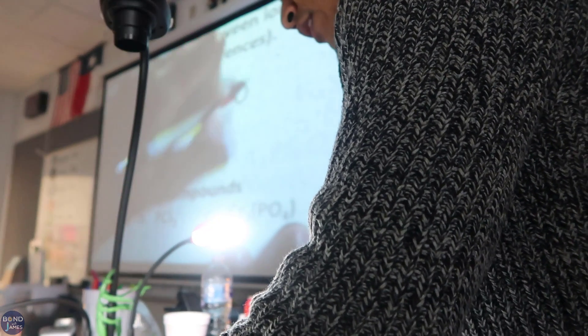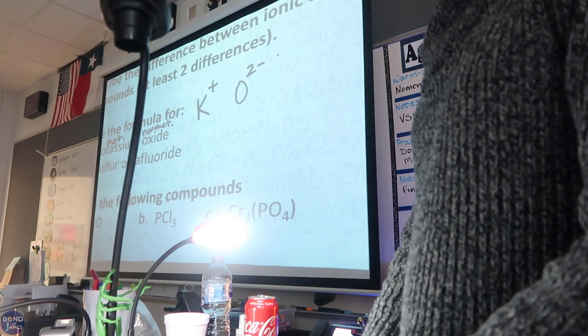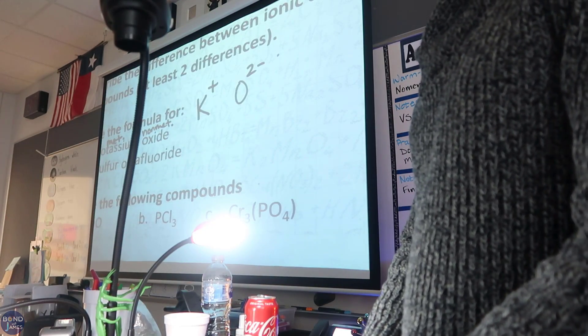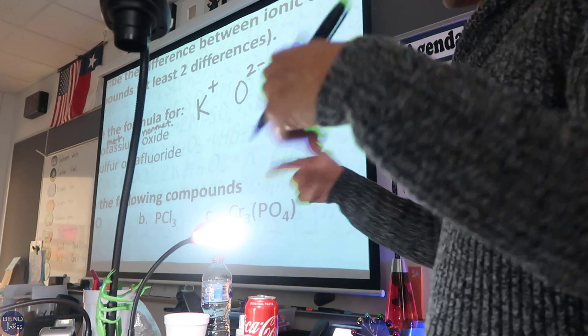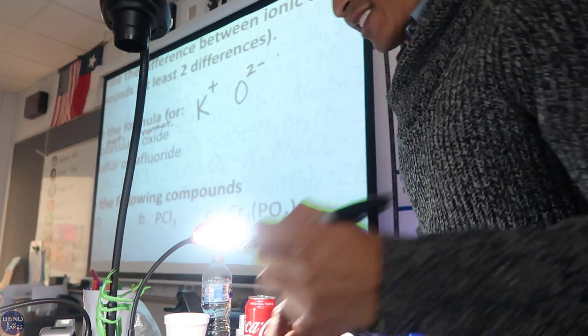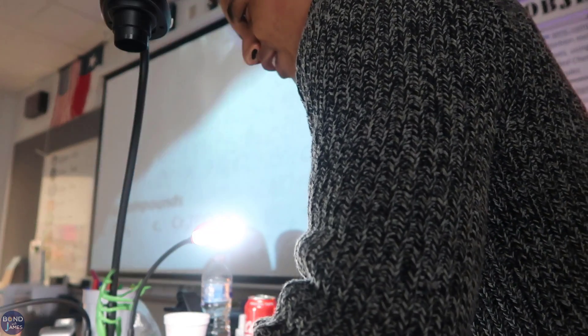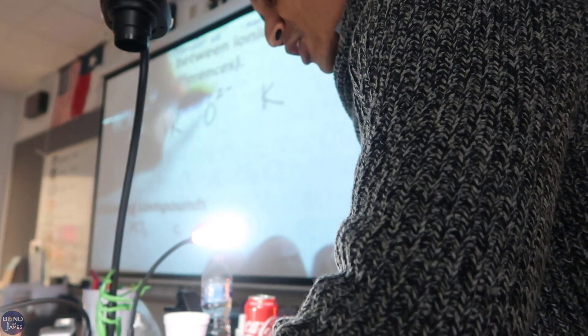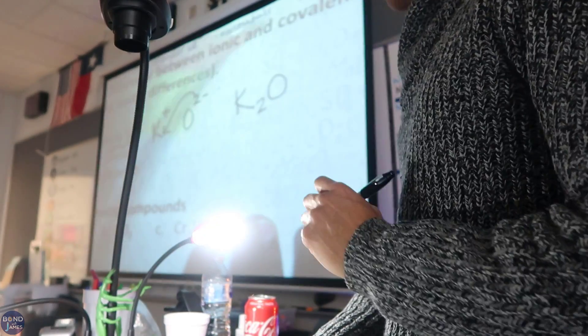Oxide is O2 minus, and what do you do next? Criss-cross applesauce, drop it like it's hot. The two criss-crosses down, so it's K2O.